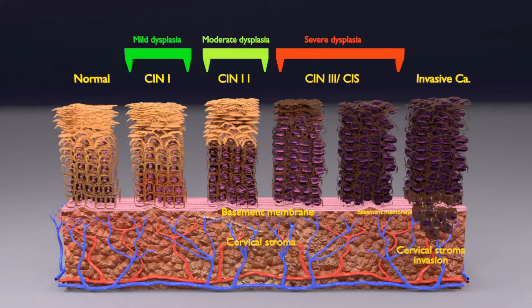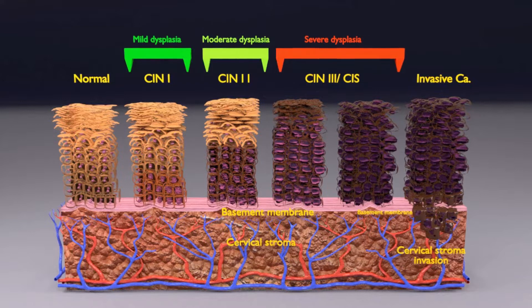The cervix consists of two parts. The endocervix is the part closer to the uterus and is lined by columnar cells that produce mucus. And next is the ectocervix that is continuous with the vagina and lined by mature squamous epithelial cells.